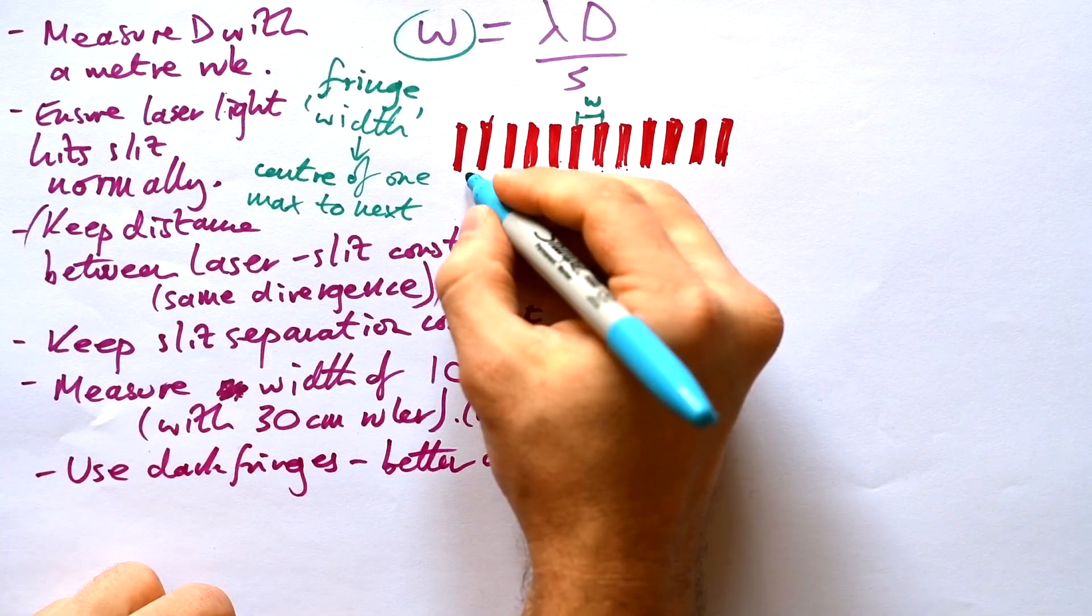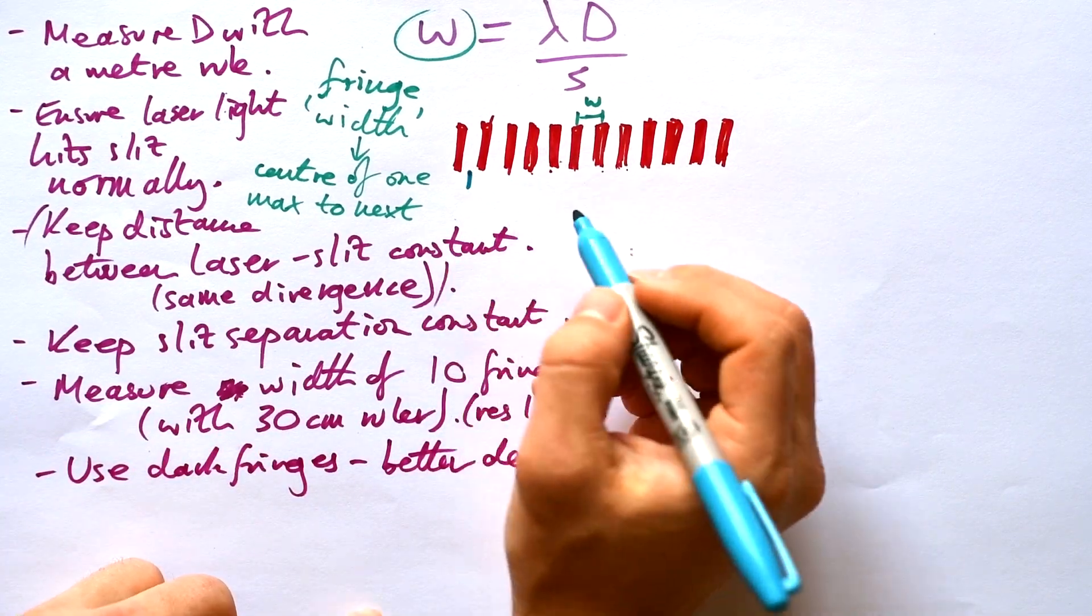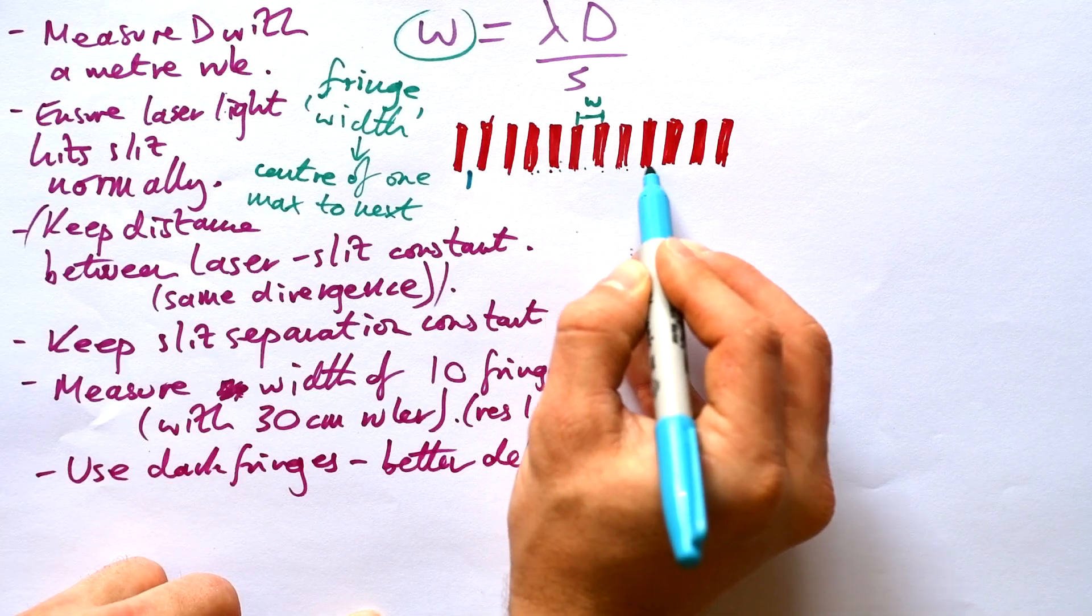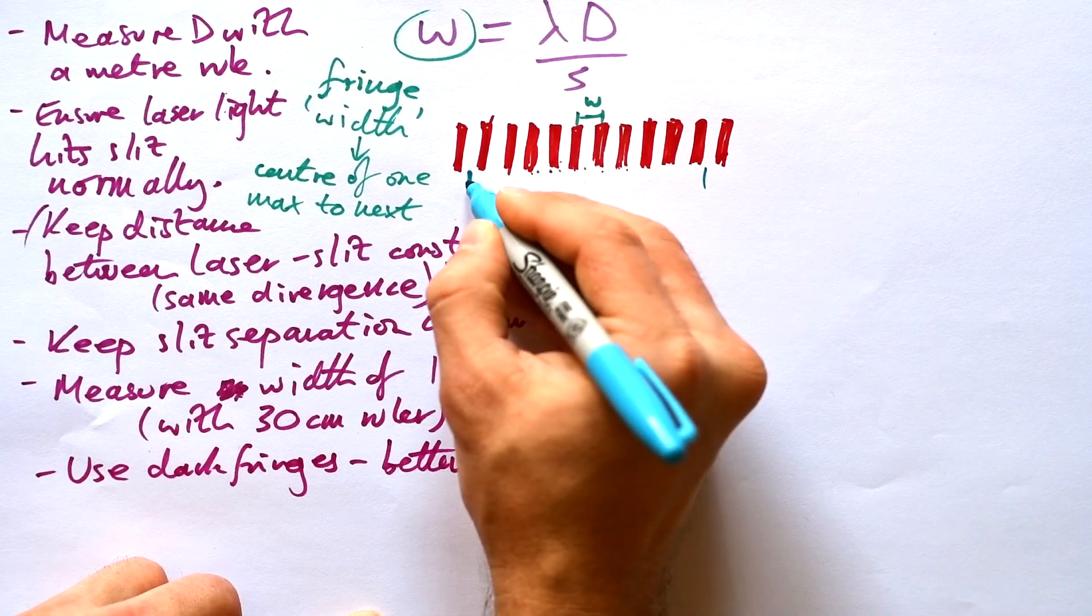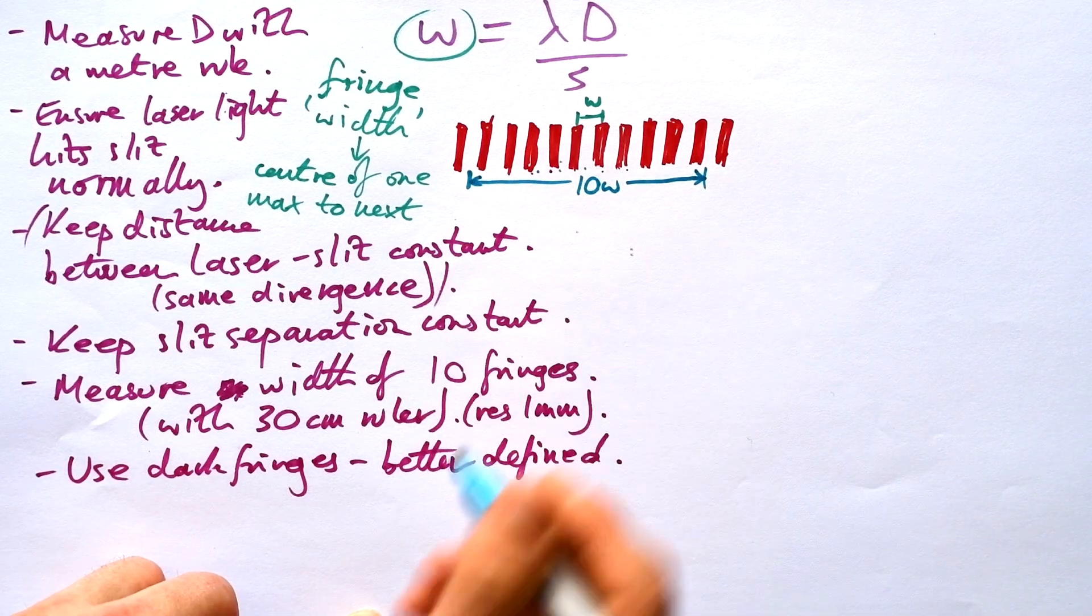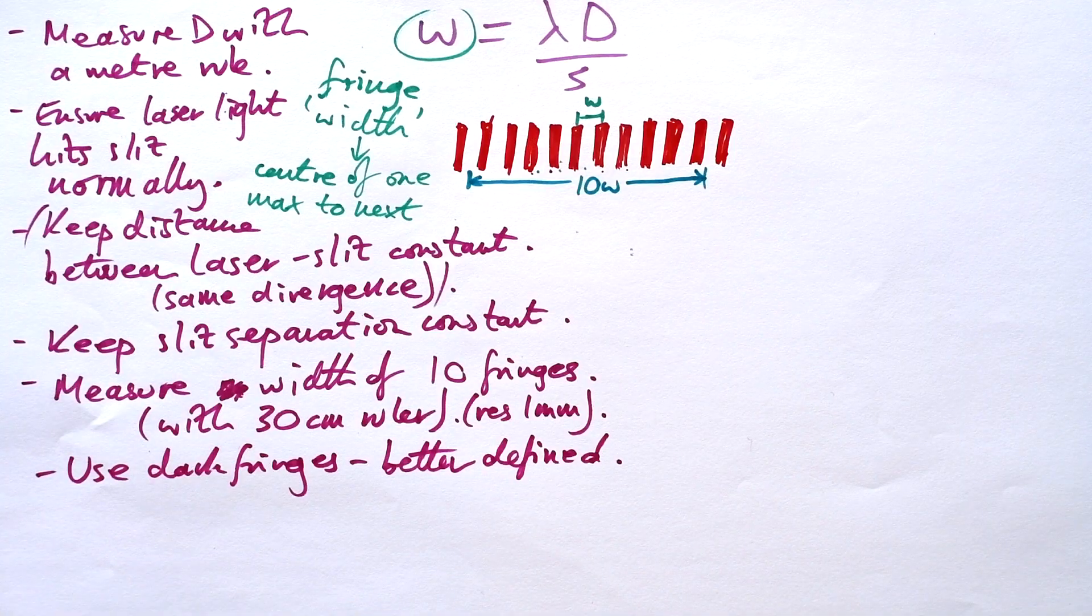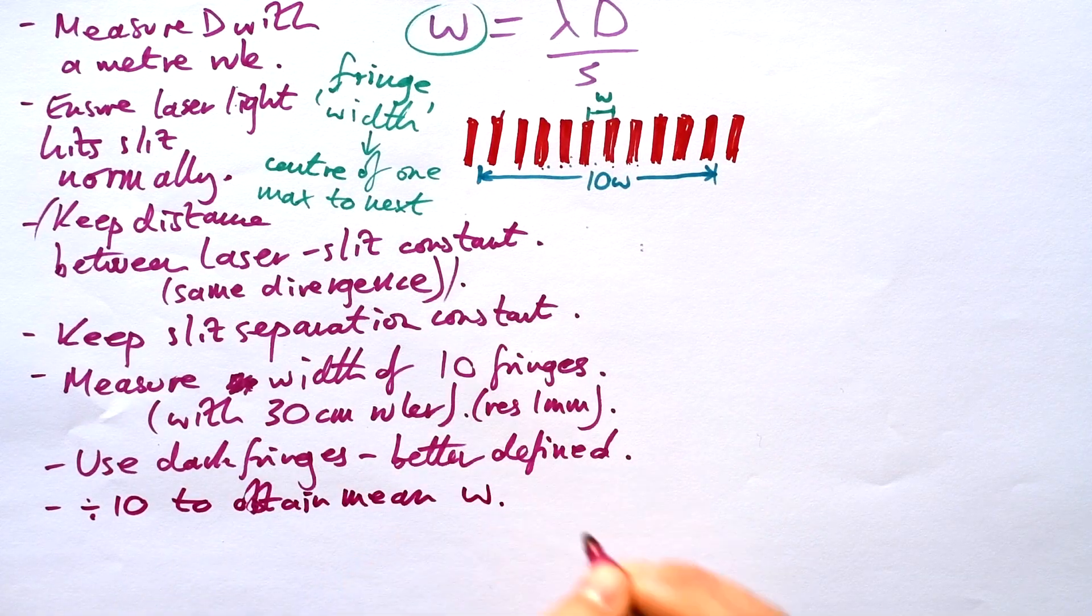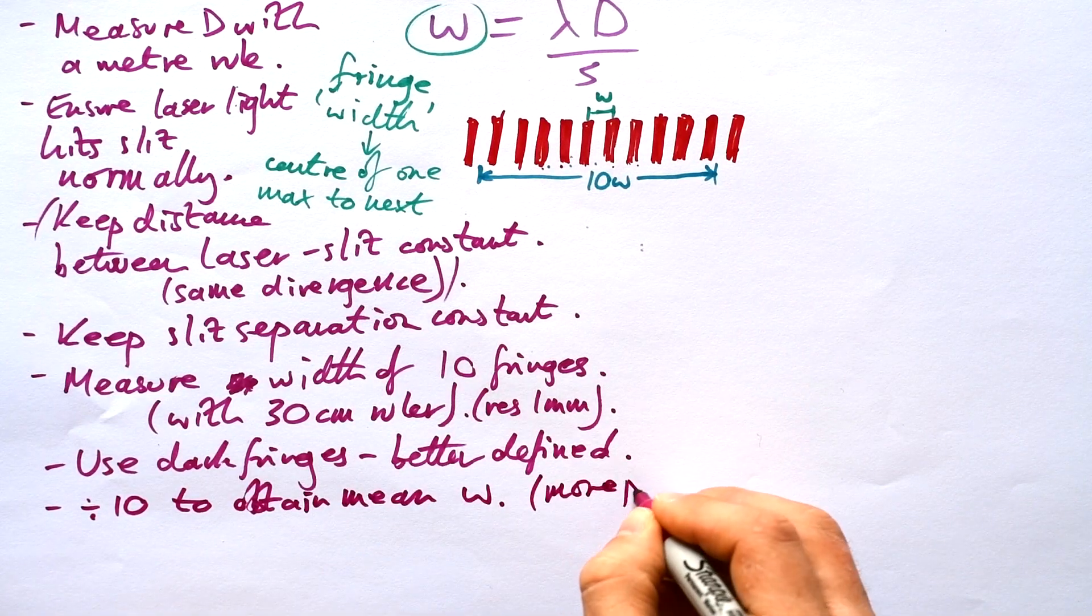So that is measuring from here and it will be more defined than that. So 0 1 2 3 4 5 6 7 8 9 10. So you're going to measure it all the way to there. That's our 10 W. That makes your readings ultimately in the end 10 times more precise. Divide by 10 to obtain mean W. It's more precise if you do it that way.